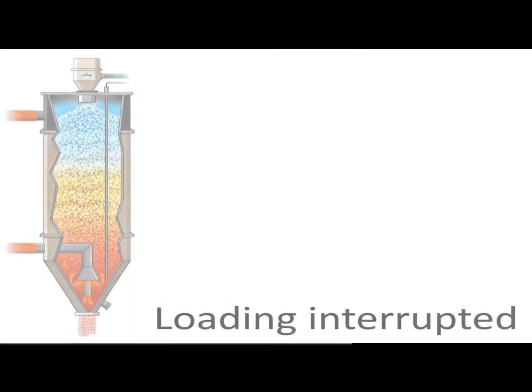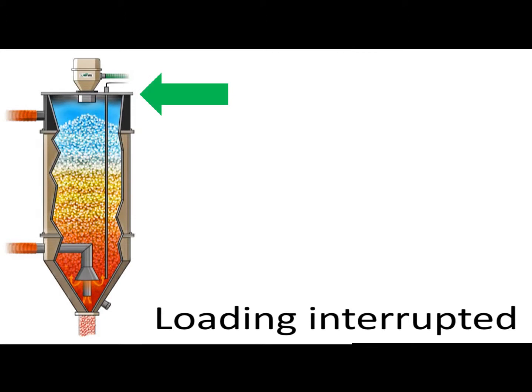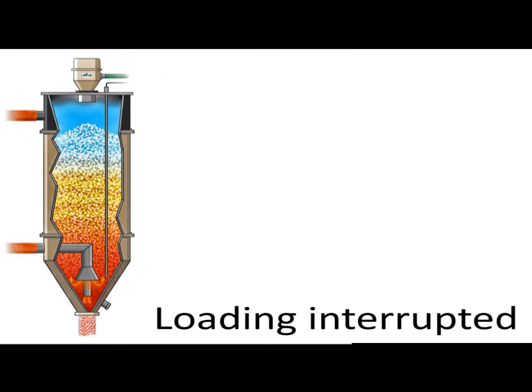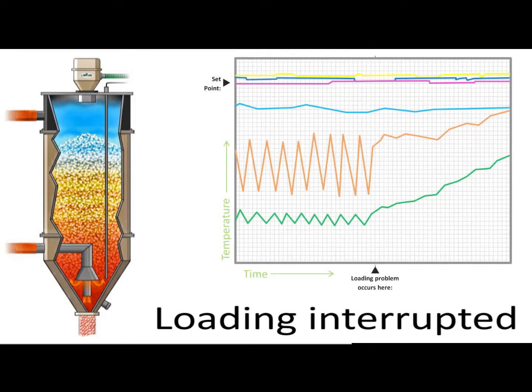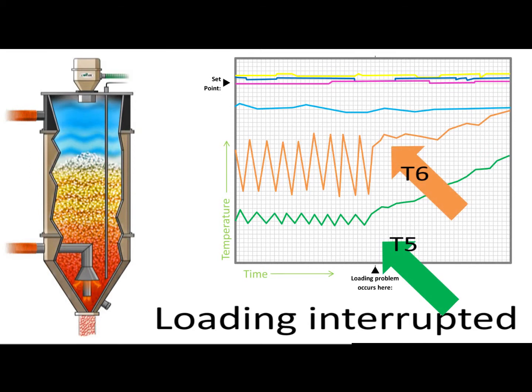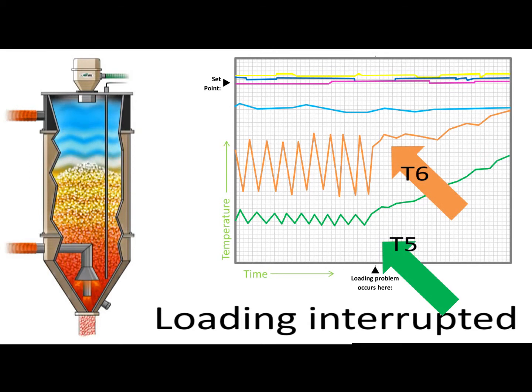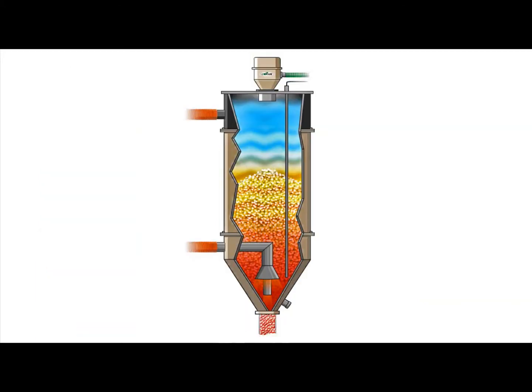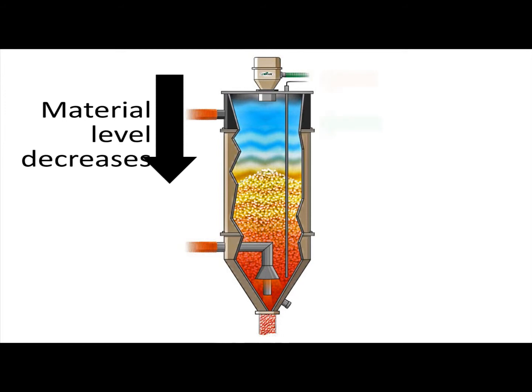If the loading function stops and no new material is being supplied to the hopper while normal operation is underway, T5 and T6 will increase in temperature. This is because as the heat consuming material level in the hopper decreases, the upper sensors are exposed to the hot air of the hopper.